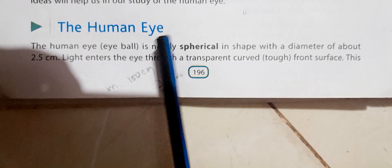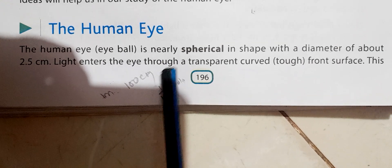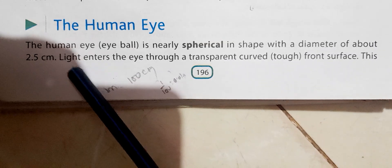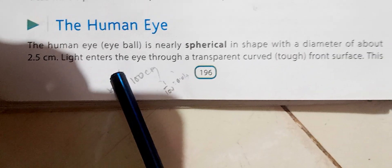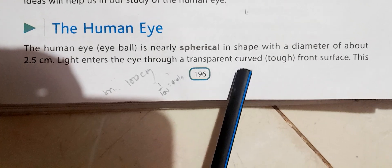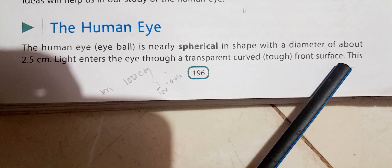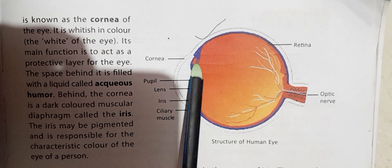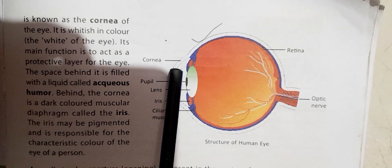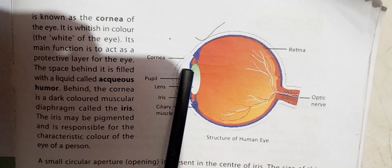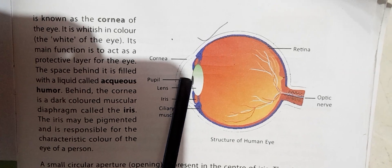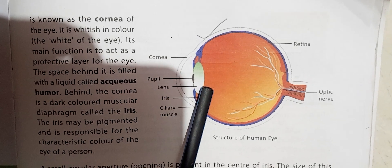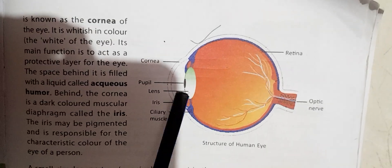Now we will discuss about the human eye. The human eyeball is nearly spherical with a diameter of about 2.5 cm. When light enters the eye through a transparent curved front surface, this is known as the cornea of the eye. The white part of the eye is called the sclera, and its main function is to act as a protective layer for the eye.